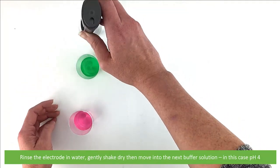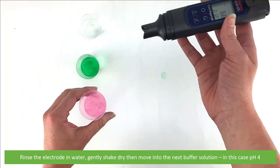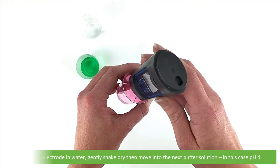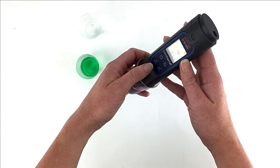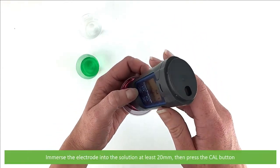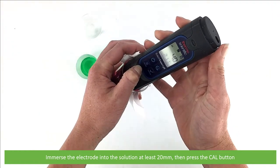Rinse the electrode in water, gently shake dry, then move on to the next buffer solution. In this case, pH 4. Immerse the electrode into the solution at least 20mm, then press the cal button.